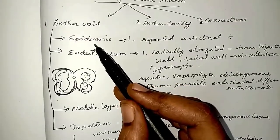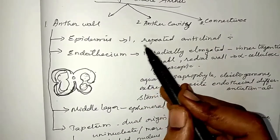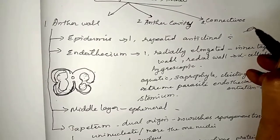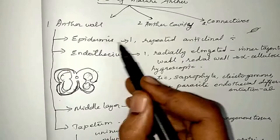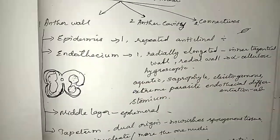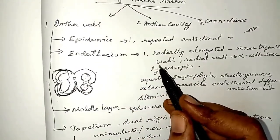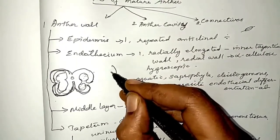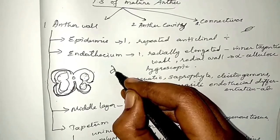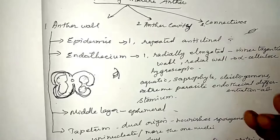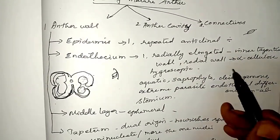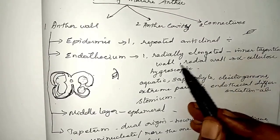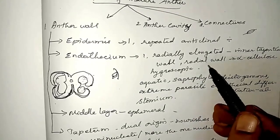The anther wall consists of the following layers. Outermost is the epidermis, a single layer that enlarges by repeated anticlinal division as the anther enlarges. Next is the endothecium, which is generally single-layered and radially elongated. The inner tangential wall and the radial wall of the endothecium are thickened due to accumulation of alpha-cellulose and sometimes lignin.